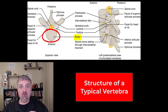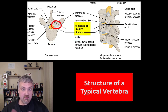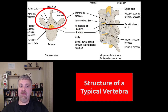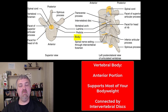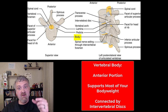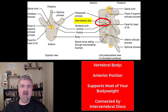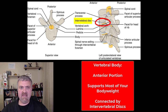A typical vertebrae is going to have a vertebral body there in the front, a vertebral arch, and seven different processes coming off of it. The body is the anterior portion of the vertebrae that supports most of your body weight. Because of this, the vertebral bodies get bigger as you travel down the spine — cervical vertebral bodies are smaller than thoracic, which are smaller than lumbar. The adjacent vertebral bodies are connected by an intervertebral disc, which I'll cover in a separate video.